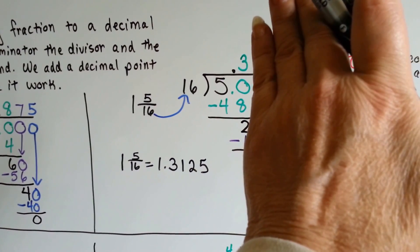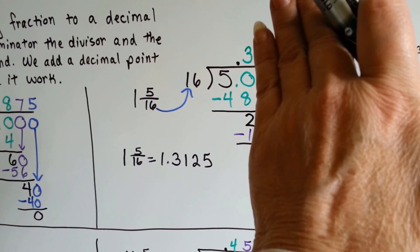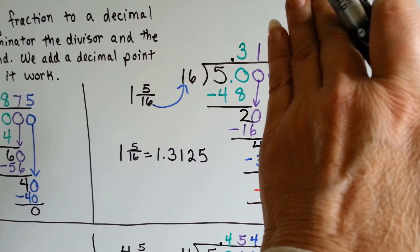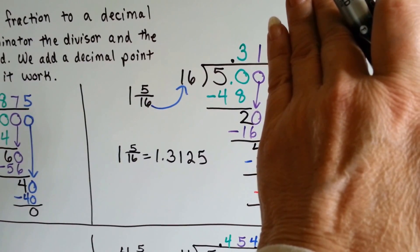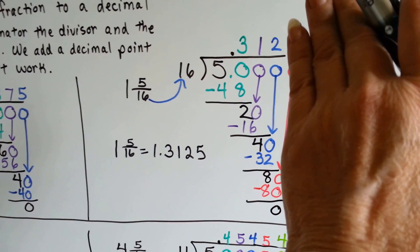16 can fit into 50 three times. 16 times 3 is 48. We do our subtraction and get 2. We add another 0. It fits into 20 one time. We do our subtraction, we get 4, and we tack on another 0.